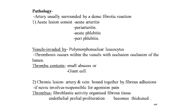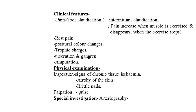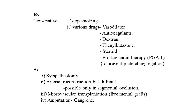Clinical features of Buerger's disease: foot claudication (intermittent claudication) — pain increases when the muscle is exercised and eases when exercise stops; rest pain; postural color changes; trophic changes; ulceration; gangrene; and possible need for amputation. On inspection, signs of chronic tissue ischemia — atrophy of skin and brittle nails. On palpation, the pulse may be absent. Special investigation: Buerger's exercise therapy. Treatment — conservative: stop smoking; vasodilators, anticoagulants, dextran, phenylbutazone, steroids, and prostaglandin therapy (PGE1) to prevent platelet aggregation. Surgical treatment: sympathectomy, arterial reconstruction (possible only in segmental occlusion), microvascular transplantation, omental grafts, and amputation if gangrene is present.